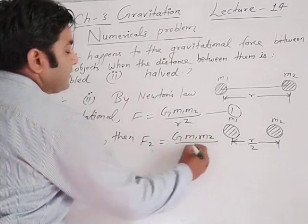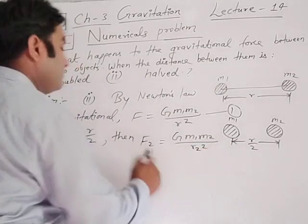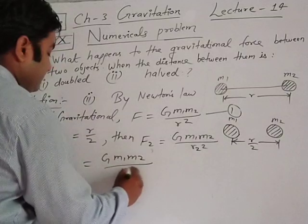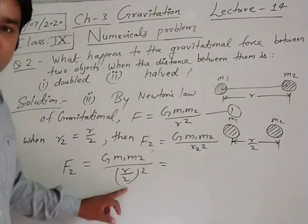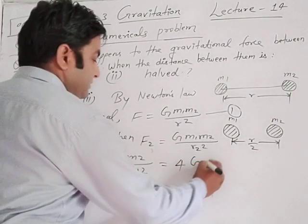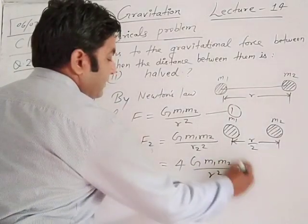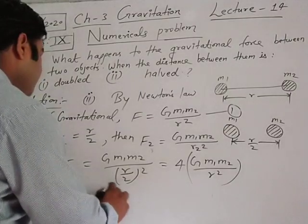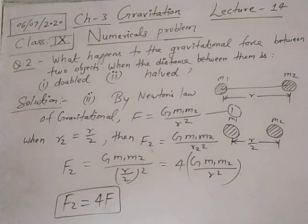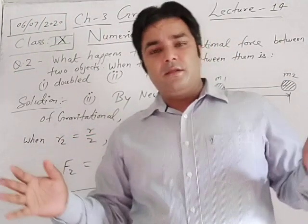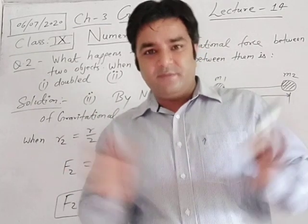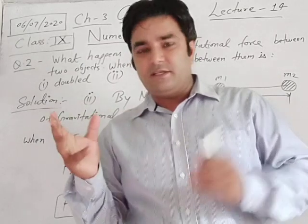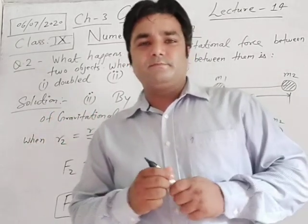Then F2 equals G M1 M2 upon R2 square. Substituting R2 = R/2: F2 equals G M1 M2 upon (R/2) square. The 2 squared becomes 4 and moves to the numerator, so F2 equals 4 G M1 M2 upon R square, which equals 4F. Force becomes 4 times the initial value. Summary: whenever distance doubles, force becomes 1/4 times; whenever distance halves, force becomes 4 times — inversely proportional, just opposite concept. Note it down.